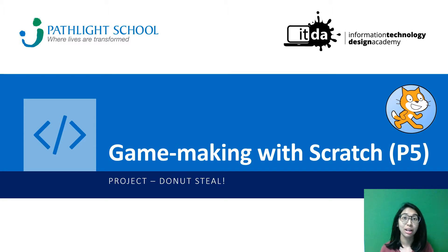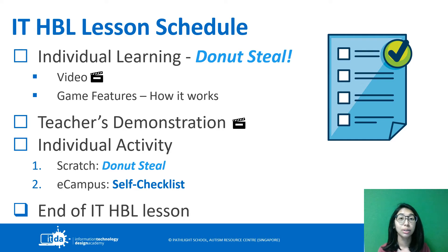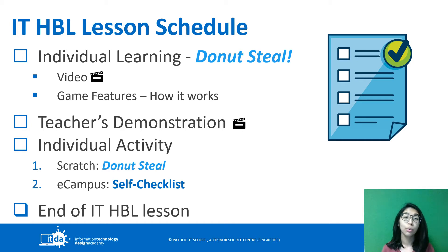So let's take a look at our schedule first. This is today's ITHBL lesson schedule. We're going to start with this video which is the individual learning. I'm going to go through the project Donut Steel review, show you a video of the gameplay, and then go through the game features. Then you need to look at the teacher's demonstration video on how to code the game and do it on your own on Scratch. Finish Donut Steel, go back to eCampus, do your self-checklist and that will be the end of ITHBL.